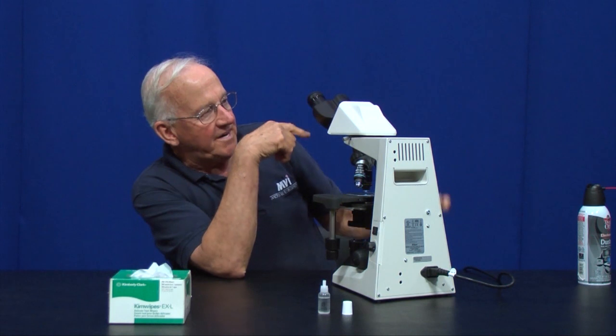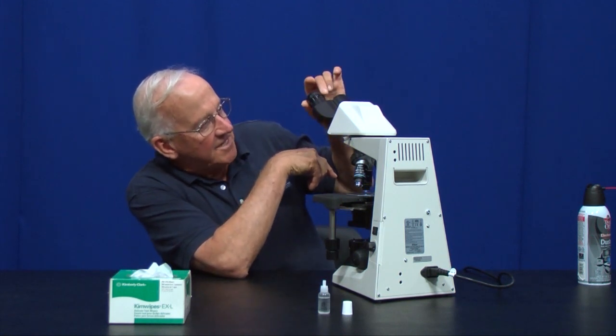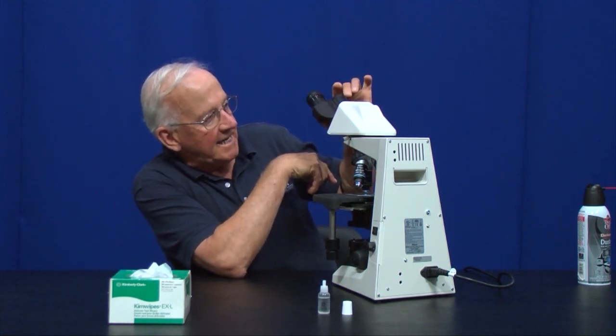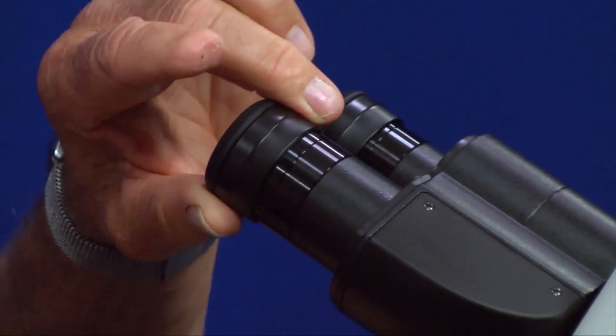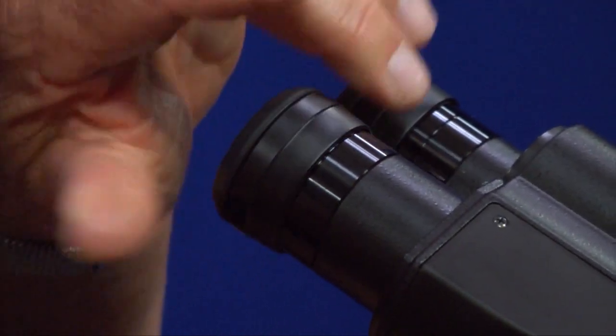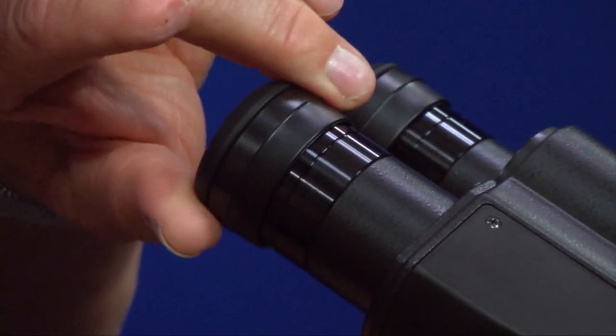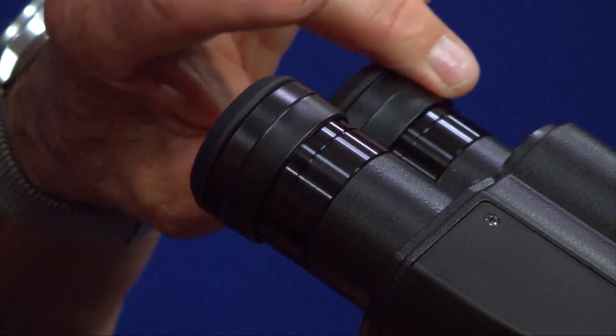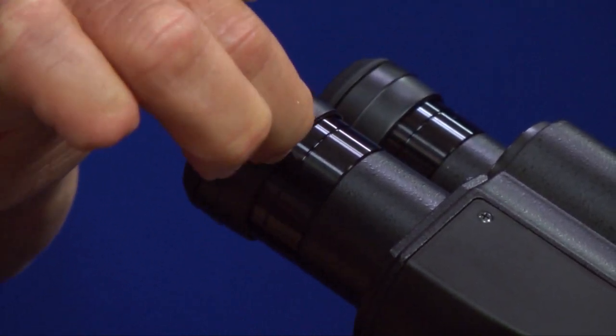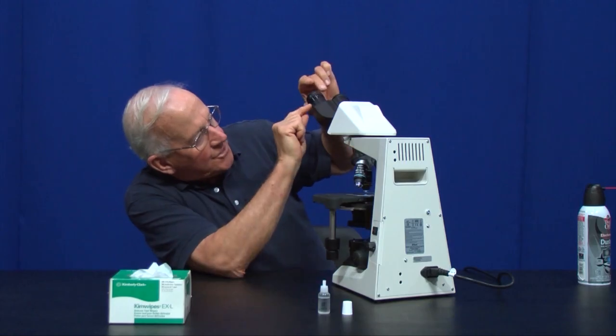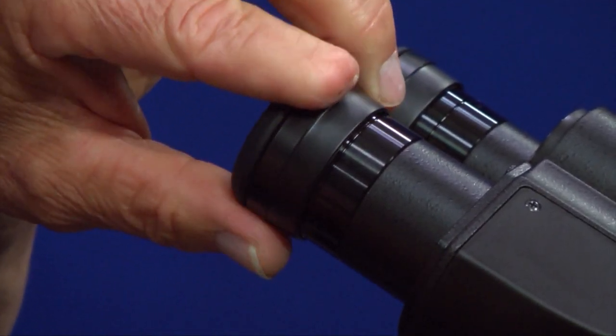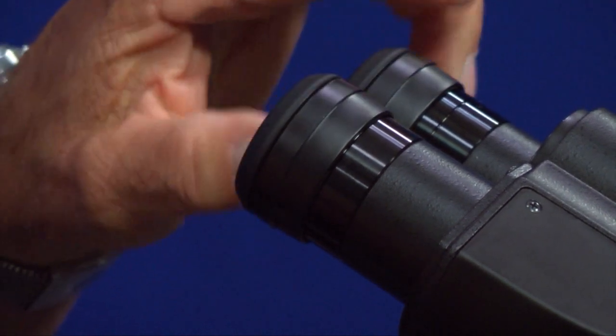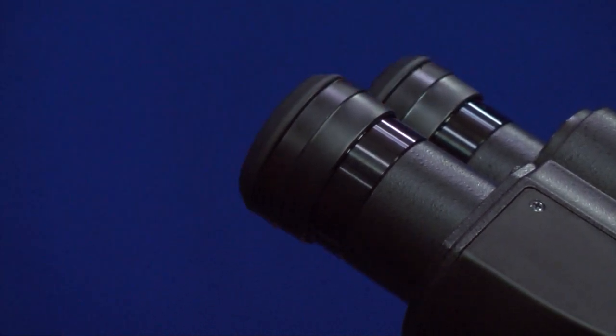The eyepieces, these 10x wide field eyepieces, it's very important that they are set at the proper height. You see that both of them are focusable. You should unscrew the eyepieces all the way up to the top, and then you will see a groove around the eye tube, and then screw them in until you can just barely see the groove on each eye tube. That means the eyepieces are set properly.